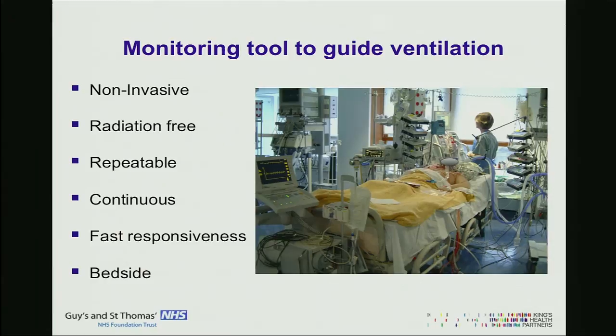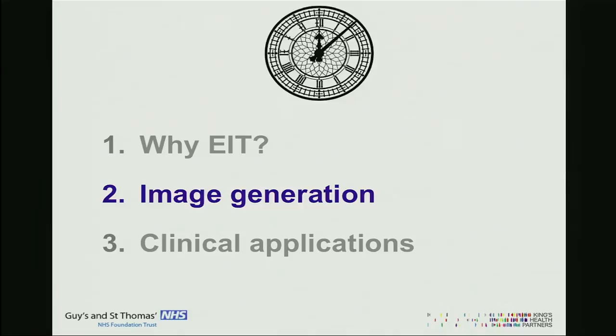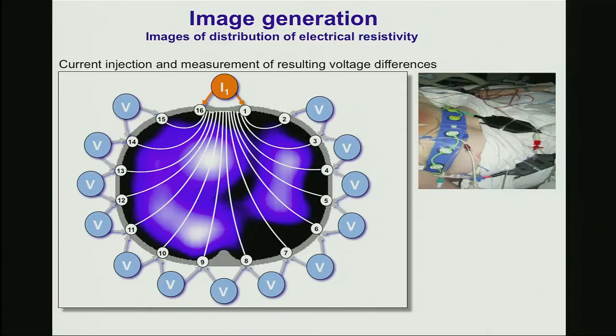How can EIT generate an image and what is an EIT image? The image that EIT generates indicates a distribution of electrical resistivity or impedance — I'm going to use resistivity and impedance as the same concept. Impedance for lung EIT is actually proportional to lung volume; it's the amount of air in the lung that stops electricity going through. We can measure that non-invasively with a rubber band and 16 electrodes around the chest, where each electrode has a significant contribution in the generation of the image.